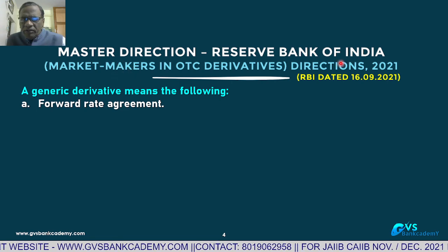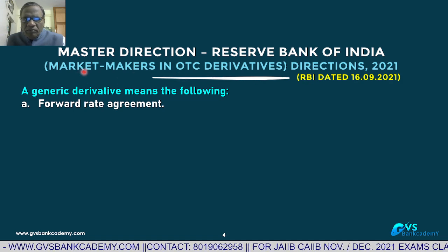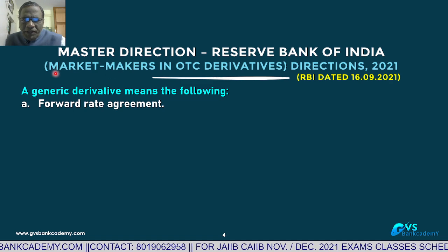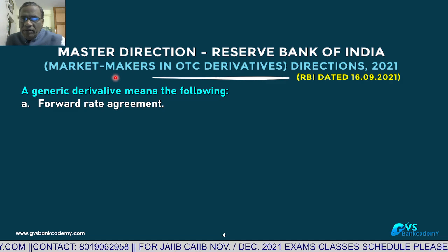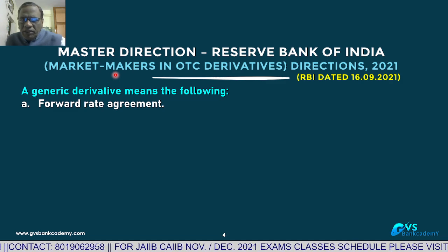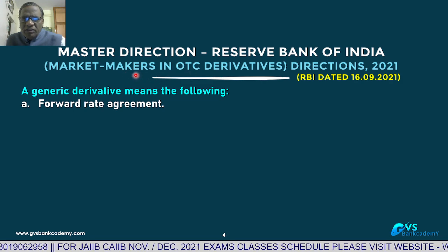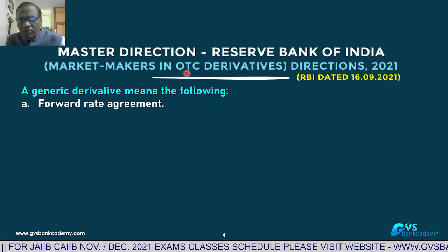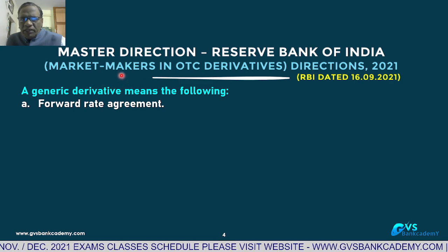Master Direction: Reserve Bank of India has issued guidelines on market makers in OTC derivatives. Market makers are intermediaries who create demand for derivative products — when all buyers are in the market, market makers become sellers; when all sellers are in the market, market makers become buyers. OTC means non-exchange traded, i.e., transactions between two eligible parties without stock exchange intervention.